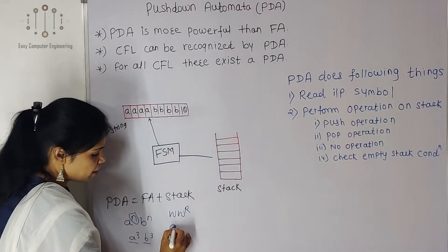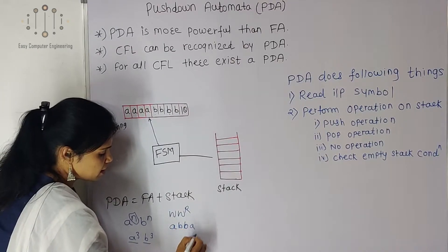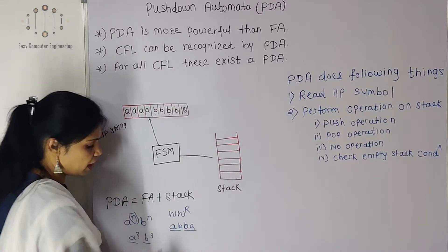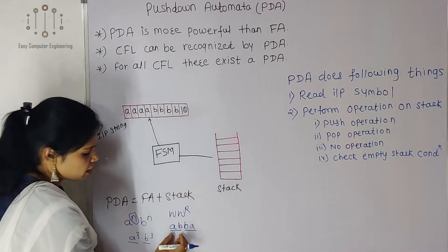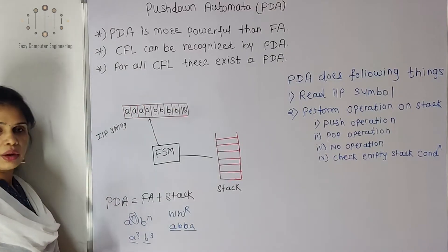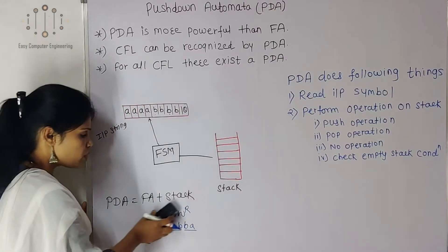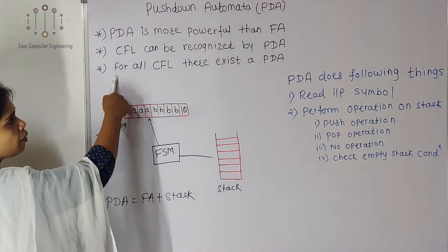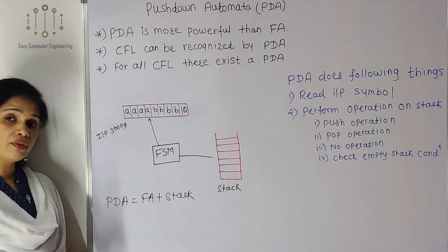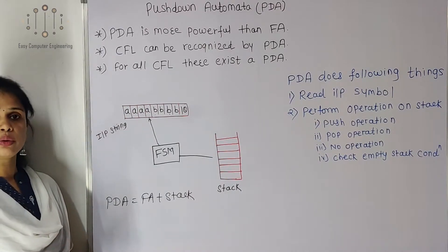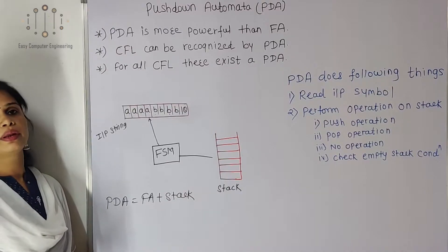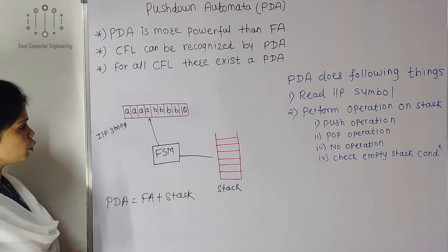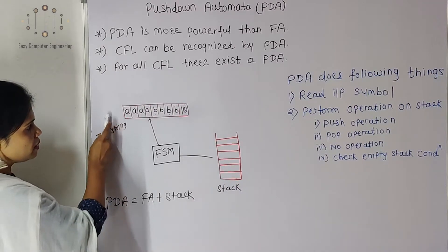Similarly, palindromes like WWR — for example ABBA — cannot be represented using finite automata. The first half should mirror the second half in reverse. In pushdown automata, these languages can be easily recognized. For every CFL as well as for all regular languages, we can represent them with the help of pushdown automata.